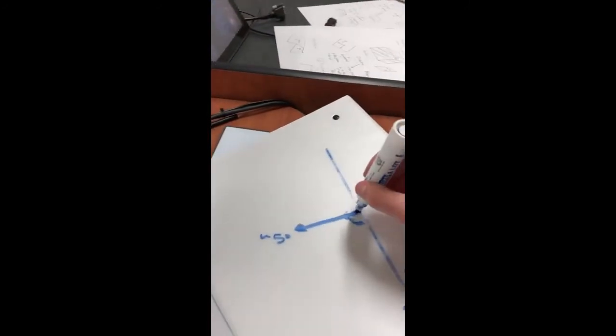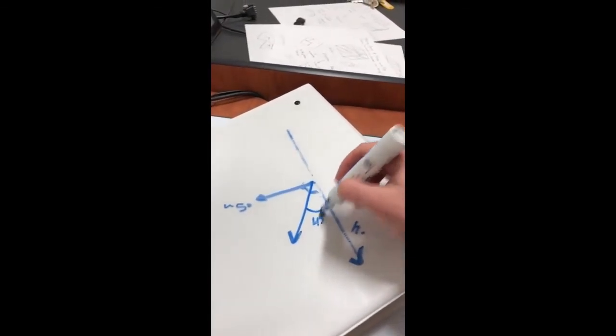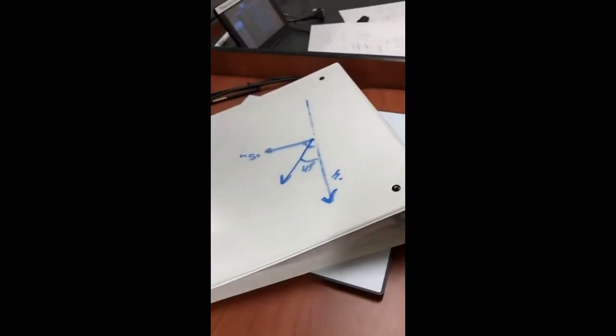If a Brunton had a lip right here that was 45 degrees, then maybe every time we took a strike and dip, we would record those two measurements. And that would be the consistent measurements we take every time, but that's just not the form of a Brunton. So that's not what we do. All right. Thanks y'all.